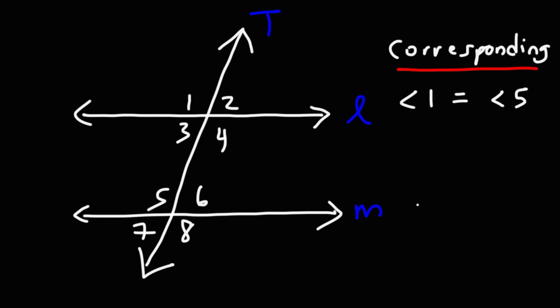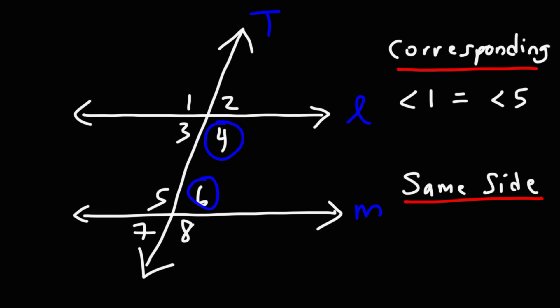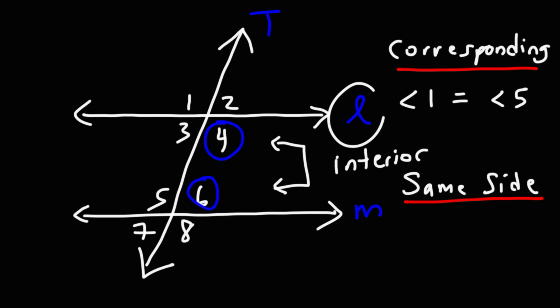The next type of angle we're going to talk about is same-side interior angles, also known as consecutive interior angles. So angles 4 and 6 are consecutive interior angles. The reason why we call them interior is because they're inside, or in between, the two parallel lines.